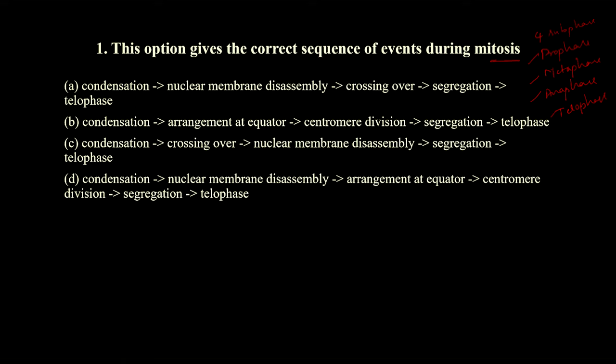Now let's see the options for the mitosis sequence question. Option A includes condensation, nuclear membrane disassembly, and crossing over — but crossing over takes place in meiosis, not mitosis, so option A is wrong. Option B has condensation and arrangement at equator, but is missing nuclear membrane disappearance, so option B is also wrong.